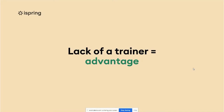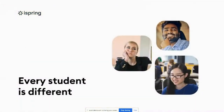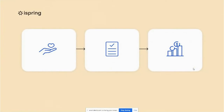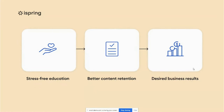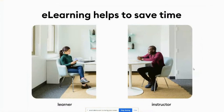But allow me to disagree, as I think that a lack of a trainer can be a huge advantage. In face-to-face training, learners are required to follow the same learning timeline. But every student is different and adjusts information at a different pace. E-learning allows studying at an individual pace that is suitable for each learner. That leads to stress-free and mentor-free education and, therefore, better content retention, which leads to better business results. E-learning also helps to save time both for the student and the trainer. There is content that can be digested by students on their own, such as lectures,